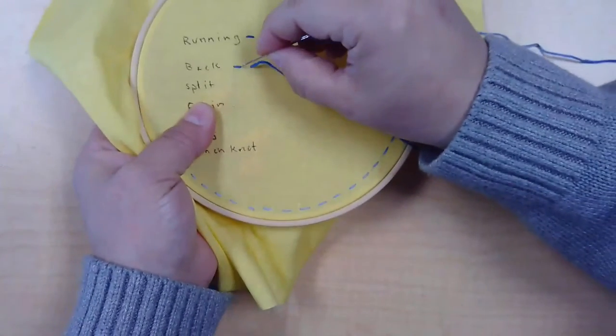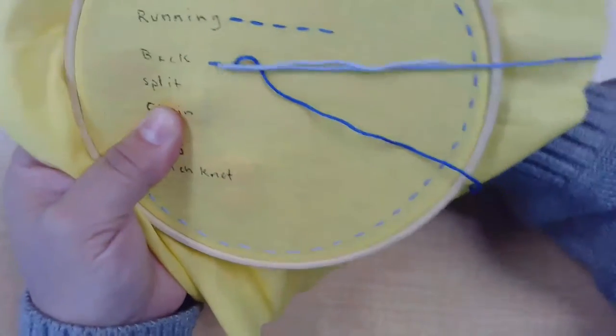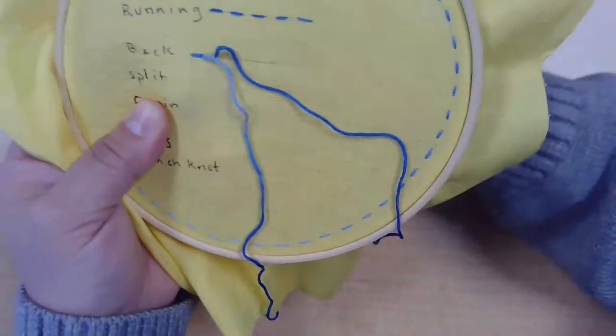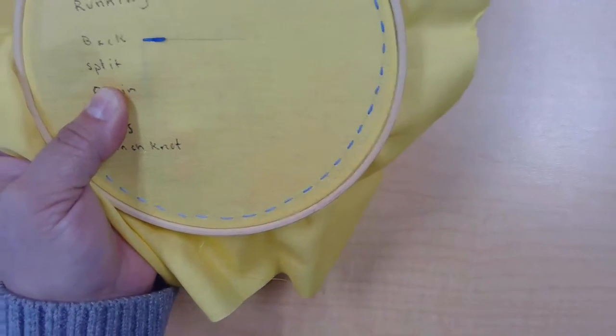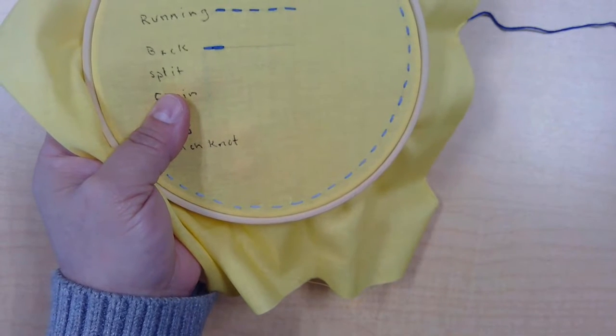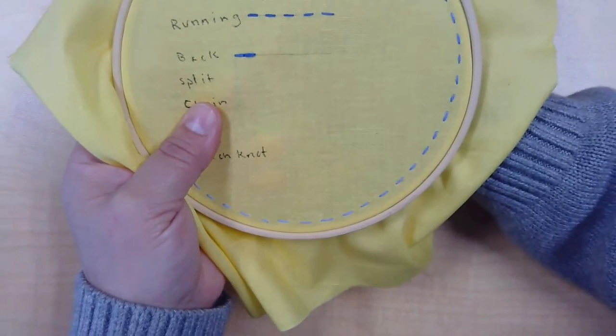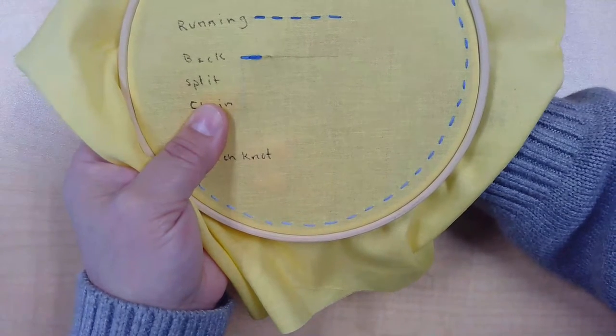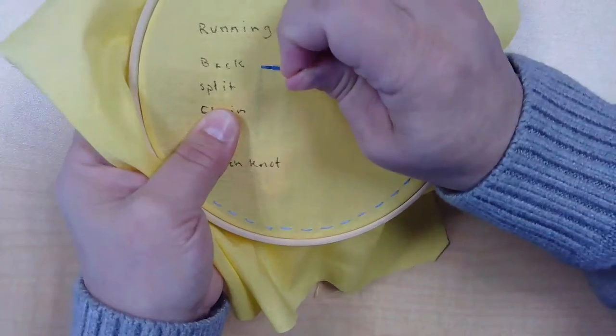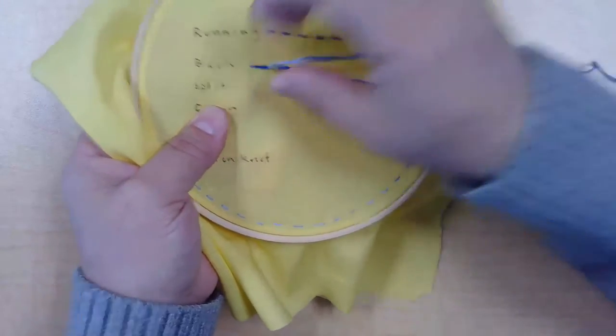Like that, and you're going to go back to where your first stitch came in. Thus the name back stitch, because you're working backwards. And it gives you a nice solid line, a nice thick line. This is good for outlining projects and bold shapes. Again, coming up a stitch length away and moving back to where you came out of your last stitch.